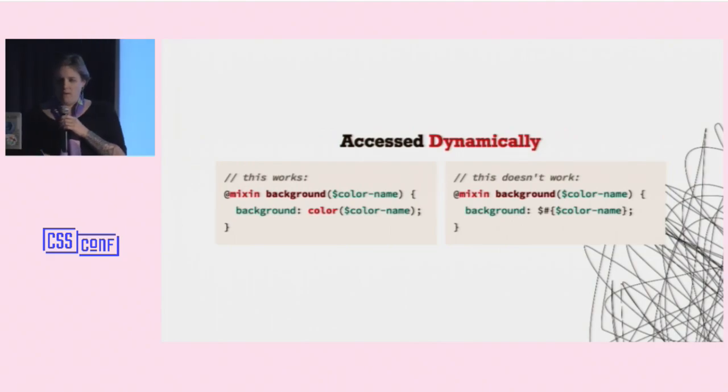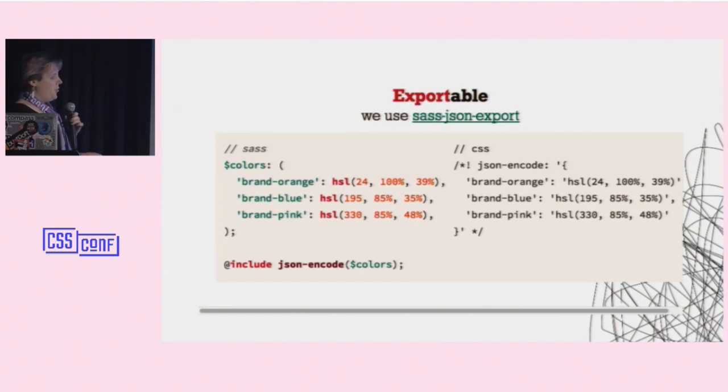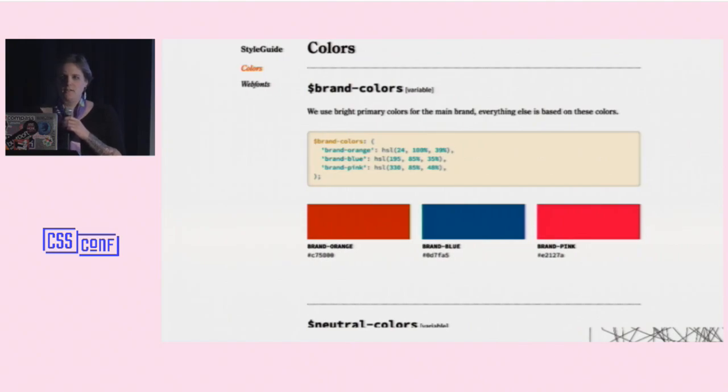I can access them dynamically like this in a way that I can't with variables. I can't dynamically call a variable. But I can dynamically call a map key. So I can write mixins that access it. I can also export it to JSON, which is super useful. We use this all the time for generating our style guides. So because it's in a map, we can just pass that map to JSON, pass that into our SASS doc theme that understands it. And we have a style guide generated automatically based on the same code that's giving us our colors.